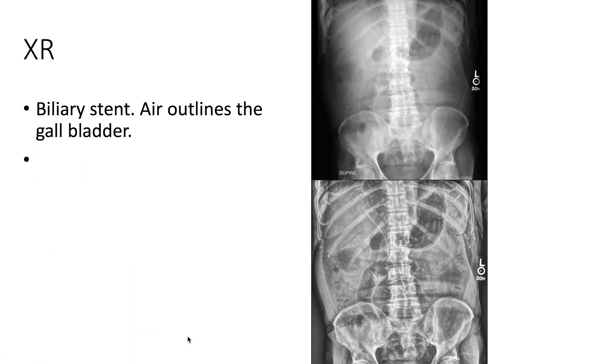On x-ray, we see the biliary stent. We also see that there is air outlining the gallbladder.